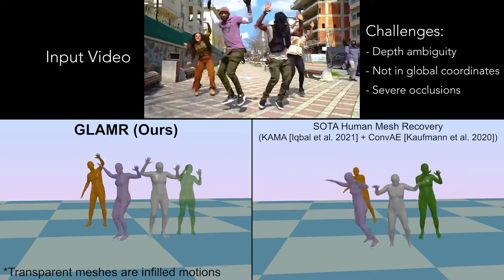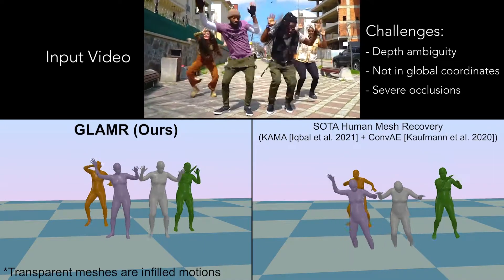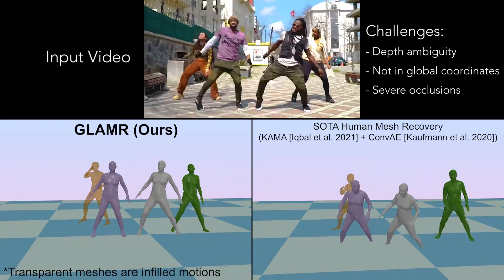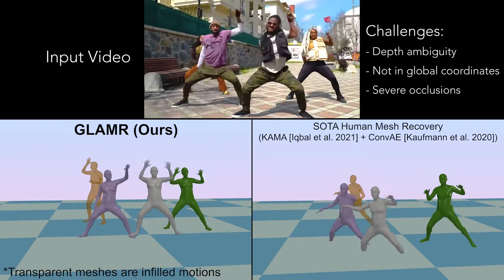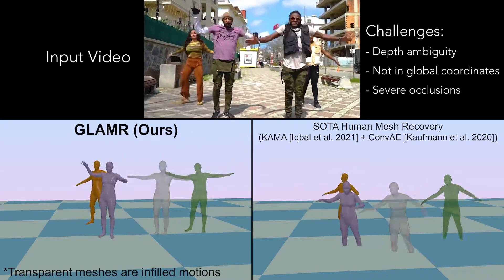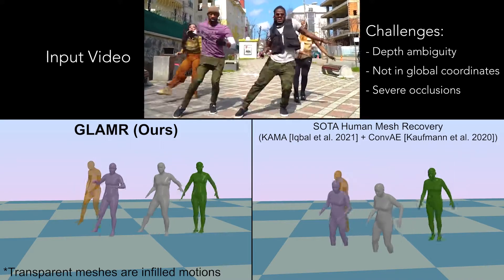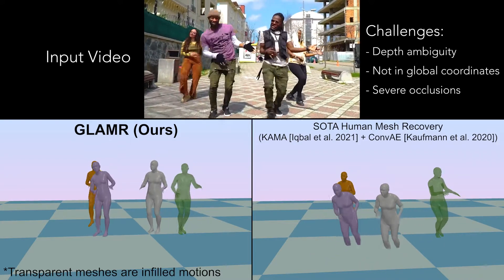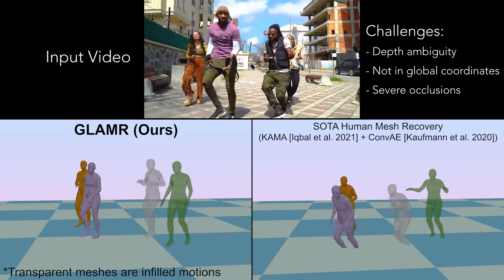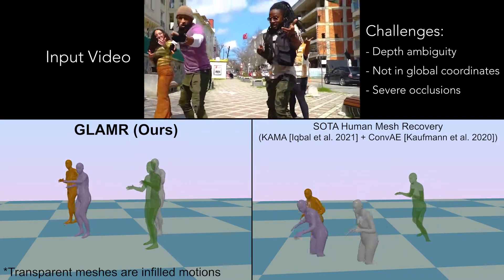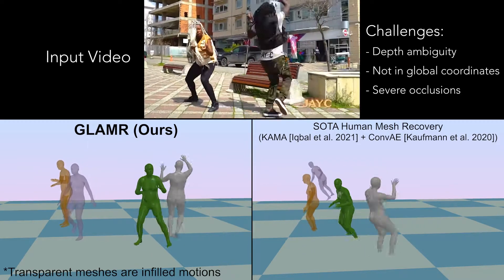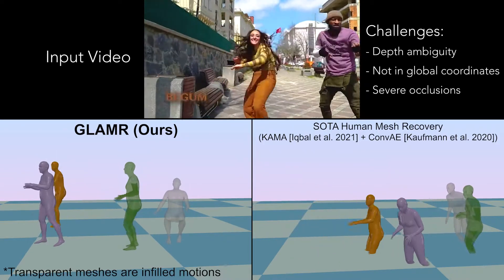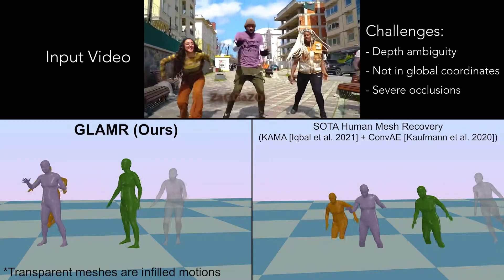Given an input video recorded with dynamically moving cameras, we want to estimate the global human motions and meshes of people in the video in a global coordinate system. This is a difficult task that challenges state-of-the-art human mesh recovery methods. Firstly, human depth estimation is a hard problem, and existing methods can output wrong and jittery depth.